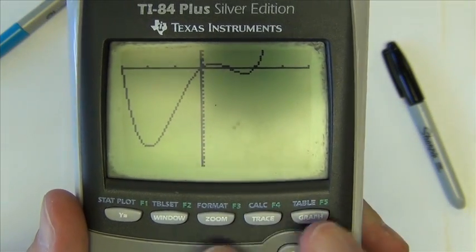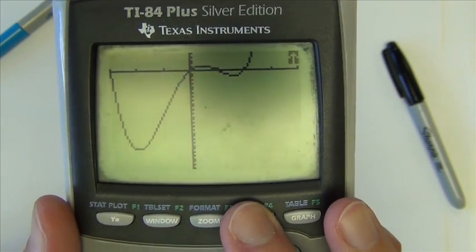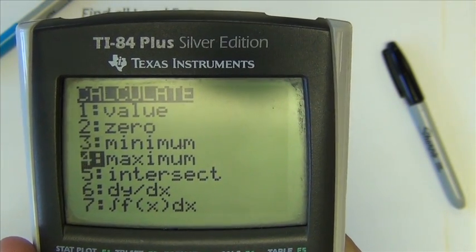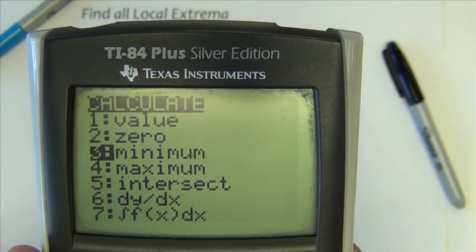We're going to go into the calculate menu like we've done previously. So second, trace. And notice there are two options here, minimum, maximum. So you have to choose which one you're going after first. Let's say we go after that maximum point.